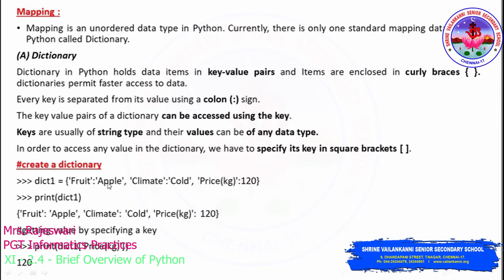When defining key-value pairs, keys should be of string data type, whereas the values can be of any data type — just like how list and tuple values can be of any type. For example, in a dictionary: 'fruit' (string key) maps to 'apple' (string value), 'climate' maps to 'cold' (string), and 'price_kg' maps to 120 (integer).